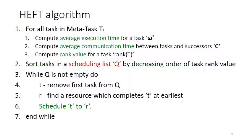Let us see the algorithm step by step. In the first step, for all tasks ti in the metatask, we compute the average execution time omega, the average communication time c between a task and its successors, and the rank value of each task. In the next step, we sort the tasks in a scheduling queue by decreasing order of rank value. While the queue is not empty, remove the task from the queue and find the resource which completes the task at earliest, then schedule that task to that resource.